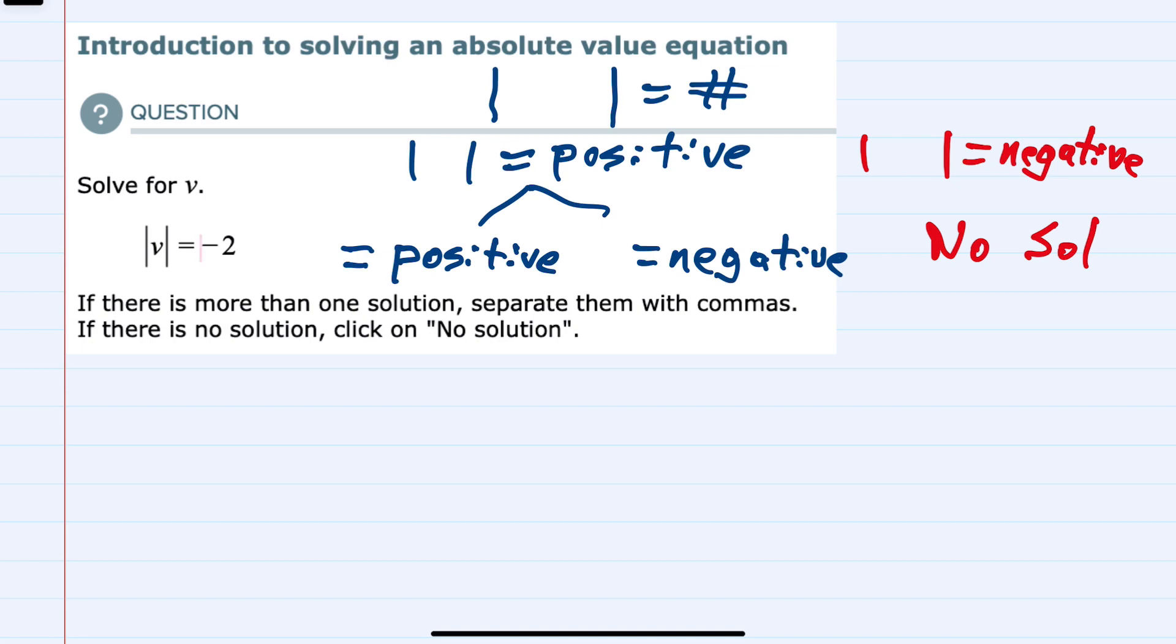And in this example, that is what we have. We have an absolute value equal to a negative number, so this will be the no solution option.